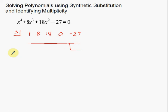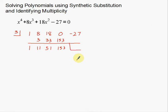Negative 3 or positive 3 are pretty good numbers to start with — it doesn't really matter, just start with something simple. Let's start the process: bring this 1 down; 3 times 1 is 3; 8 plus 3 is 11; 11 times 3 is 33; add to get 51; 51 times 3 is 153 — and it's clear that's not going to give me zero. Positive 3 doesn't work.